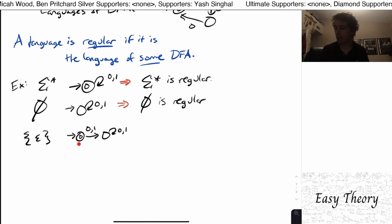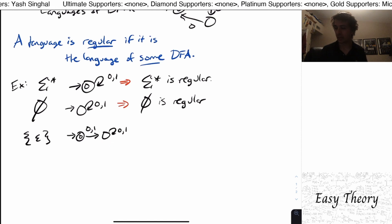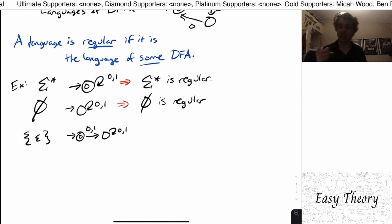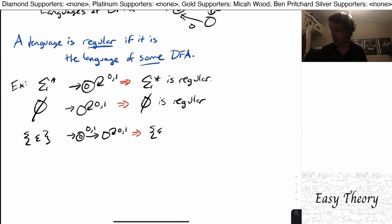And here, we notice that in order to accept anything, we have to be in this start state right here, because the other state's not final. And the only string that stays there is the empty string, because if we have any string that is not empty, therefore we end up at this other state over here. So this DFA accepts exactly one string, which is the empty string, and that's what this language is right here. So this implies that that language is regular.